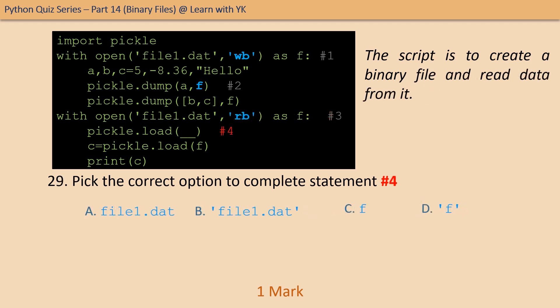Question number twenty-nine: pick the correct option to complete statement number four. The correct option is option C — we have to load data from the file, so the answer is pickle.load with the file object name.